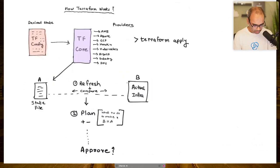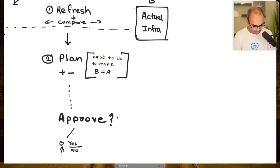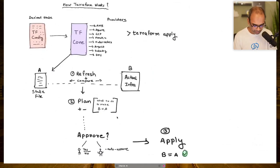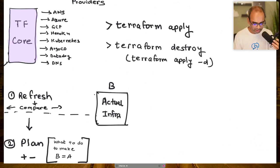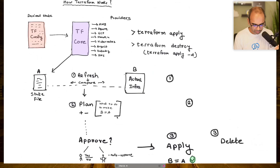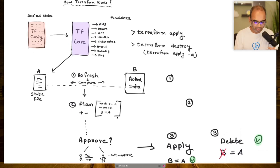If any configuration diverges from the state file, Terraform brings it back into compliance. You can approve changes manually each time you apply, or set up auto-approval. You can keep applying changes, and finally use terraform destroy — which is essentially terraform apply with a destroy flag — to delete the infrastructure you've created.